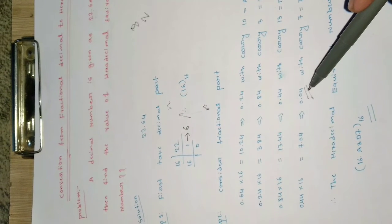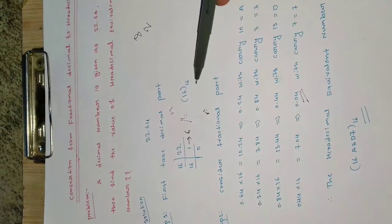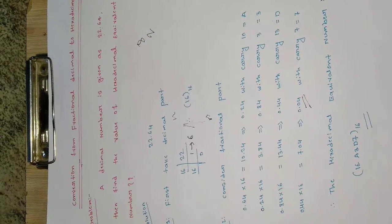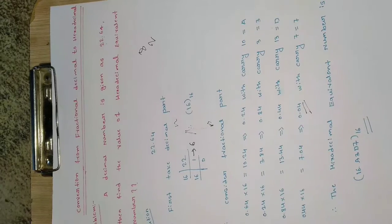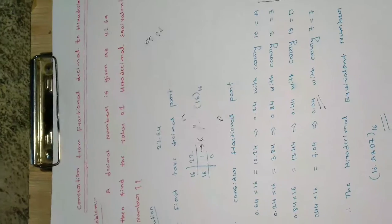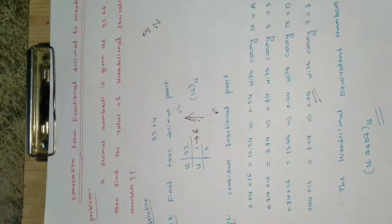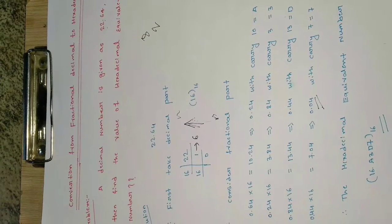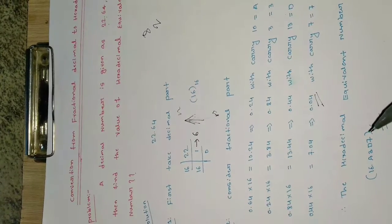0.04 is almost equal to 0, so we stop here. The hexadecimal equivalent is: for the integer part 22 we got 16, and for the fractional part 0.64 we got A3D7. Since these digits are on the right side of the decimal point they are read top to bottom, giving 16.A3D7.